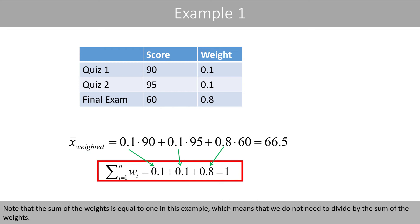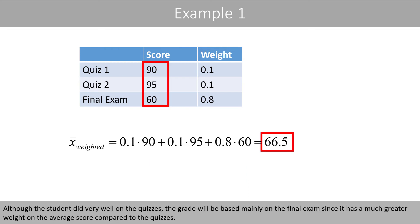Note that the sum of the weights is equal to 1 in this example, which means that we do not need to divide by the sum of the weights. Although the student did very well on the quizzes, the grade will be based mainly on the final exam, since it has a much greater weight on the average score compared to the quizzes.